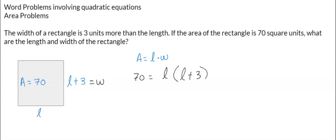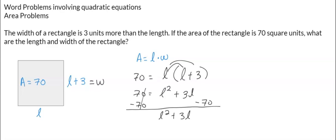Let's distribute this first. So 70 is equal to L squared plus 3L. Next, we're going to subtract the 70 and move it to this side so that it equals 0. So that would be L squared plus 3L minus 70 equal to 0. I'm going to bring this up here and rewrite it: 0 is equal to L squared plus 3L minus 70.